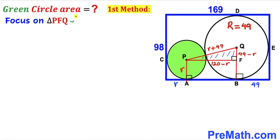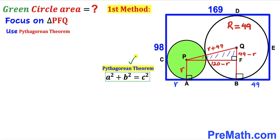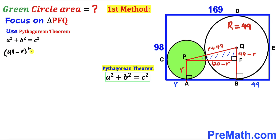Now we focus on right triangle PFQ and apply the Pythagorean theorem: a² + b² = c². The hypotenuse is r + 49, and the two legs are 120 minus r and 49 minus r. Substituting into the formula: (49 − r)² + (120 − r)² = (r + 49)².